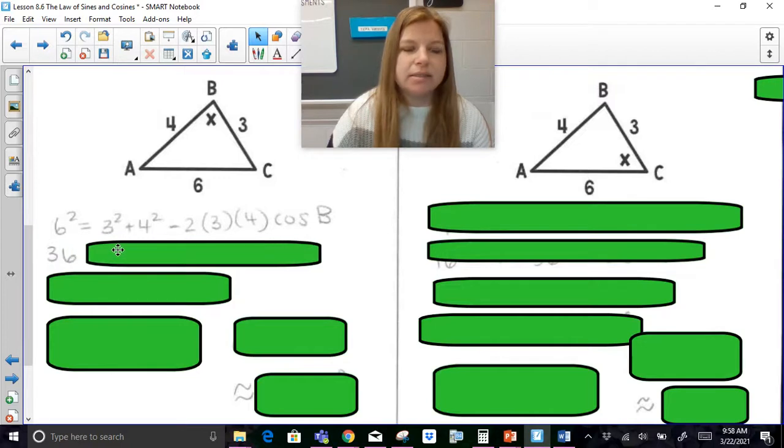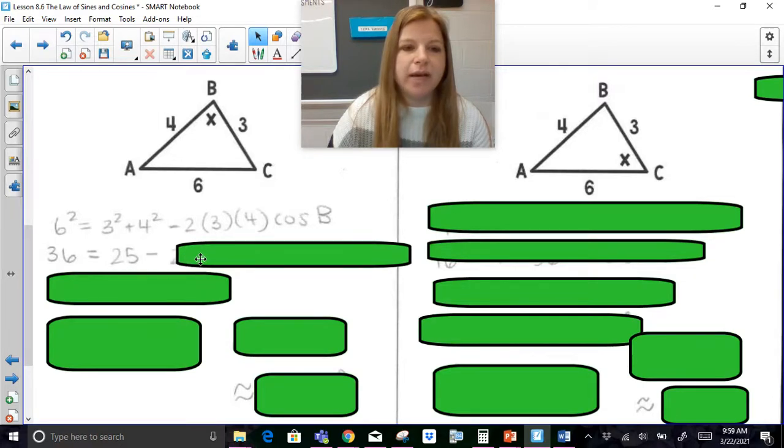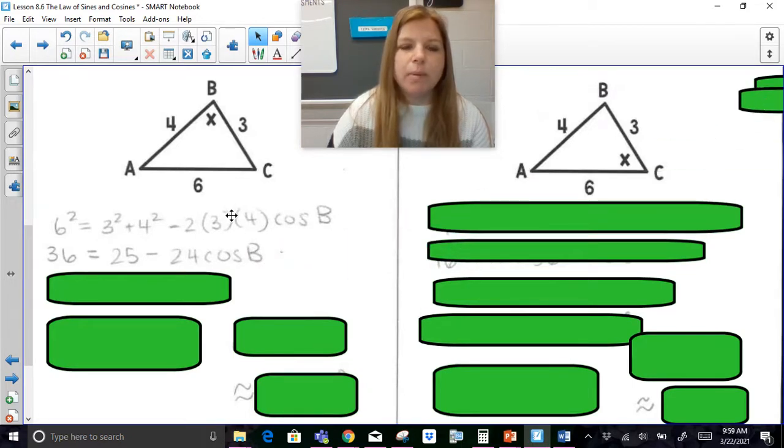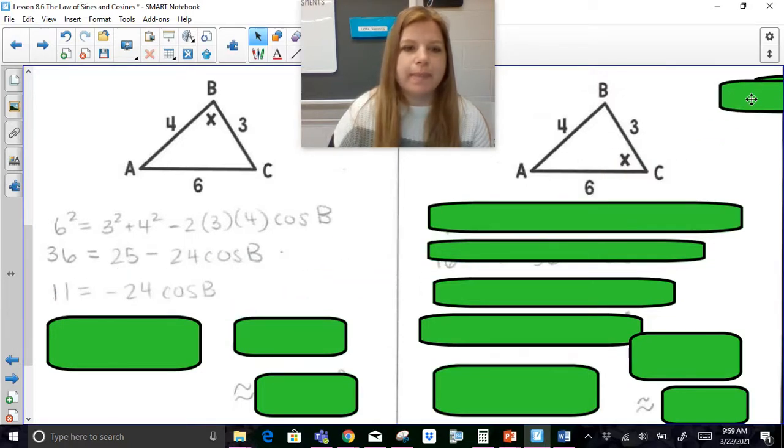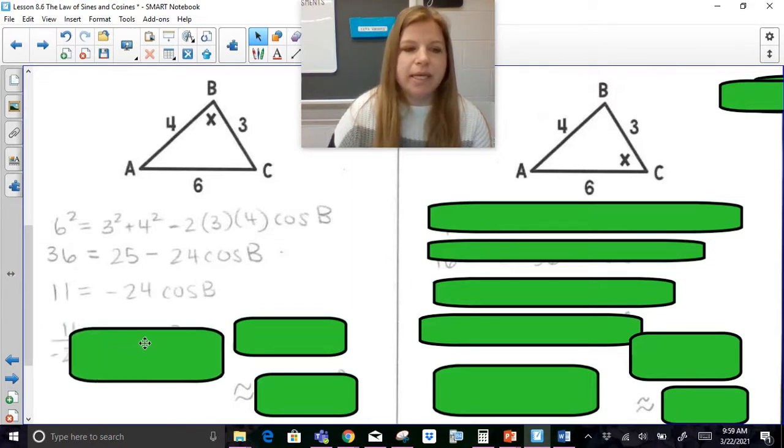6 squared is 36. Then I've got 3 squared is 9, 4 squared is 16. Add them up, I get 25. 2 times 3 is 6. Times 4 is 24. Remember, the whole goal is to get cosine B now by itself. So I'm going to subtract 25. So I have 11 equals negative 24 cosine B. I'm going to then divide both sides by negative 24.